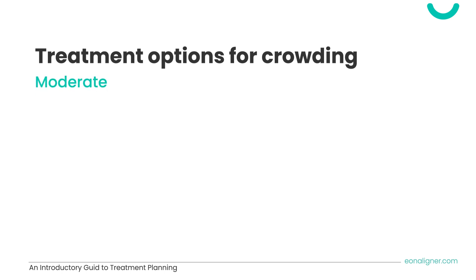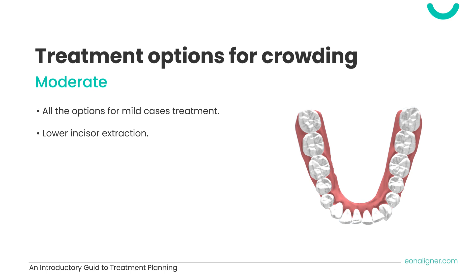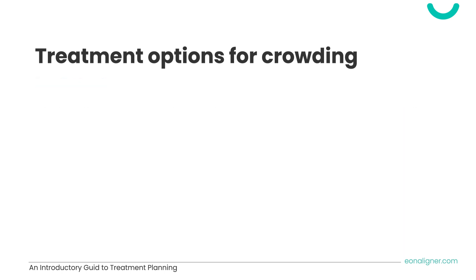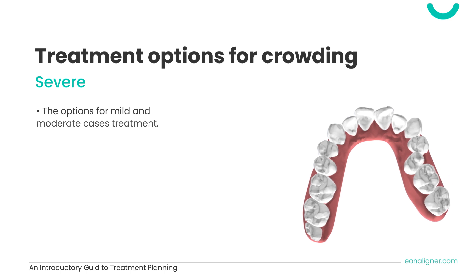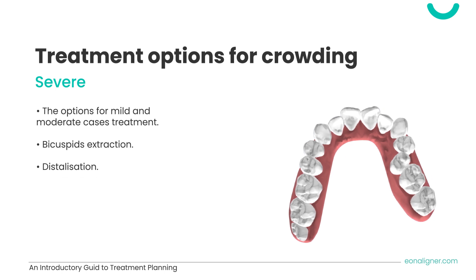In moderate cases, we can use all the options from mild crowding in addition to considering extraction, for example of lower anterior teeth. When treating severe crowding, all options available for mild and moderate cases apply, in addition to planning extraction for bicuspid teeth depending on the space needed, considering the jaw relationships, as well as the option of distalization.